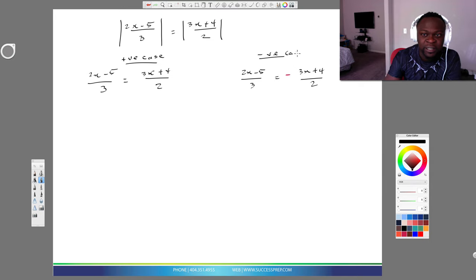In my positive case here, I just solve it as is. Now obviously the thing I want to do, because it's divided by 3 and divided by 2 here, there are a number of ways you could do it. You can find a common denominator or you could cross multiply. I think I'm going to cross multiply in this case.